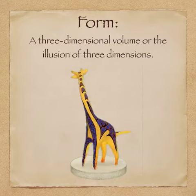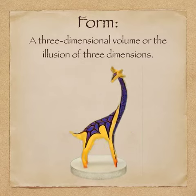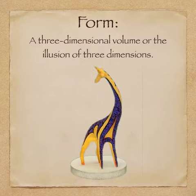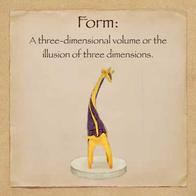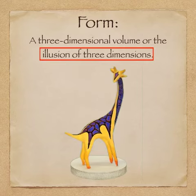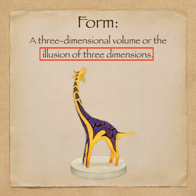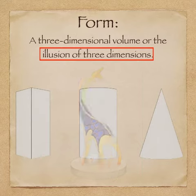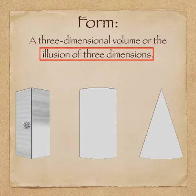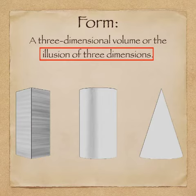But form can also be utilized in two-dimensional works of art such as drawing or painting. Here is where the illusion of three dimensions comes into play. In a pencil drawing, this illusion is created with shading. It's these variations from light to dark cast over the surface of the object that create the illusion of three dimensions.